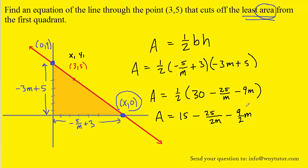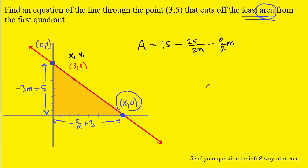Our next step to minimize this area is to calculate the derivative. Before doing so, we move m to the power of 1 to the numerator, so it becomes m to the minus 1. Using simple power rules: the derivative of the constant 15 becomes 0; pulling the negative 1 down gives us plus 25 over 2m to the negative 2; and the derivative of negative 9-halves m is simply negative 9-halves.